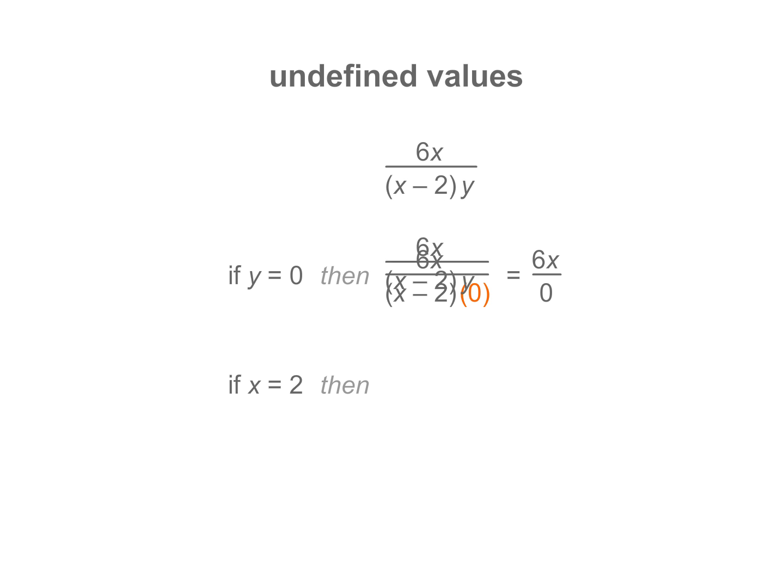But if x equals two, then x minus two would be zero, and again the denominator would equal zero. Think of this as looking for hidden zeros. When simplifying rational or fractional expressions, look for any and all values that can cause division by zero.